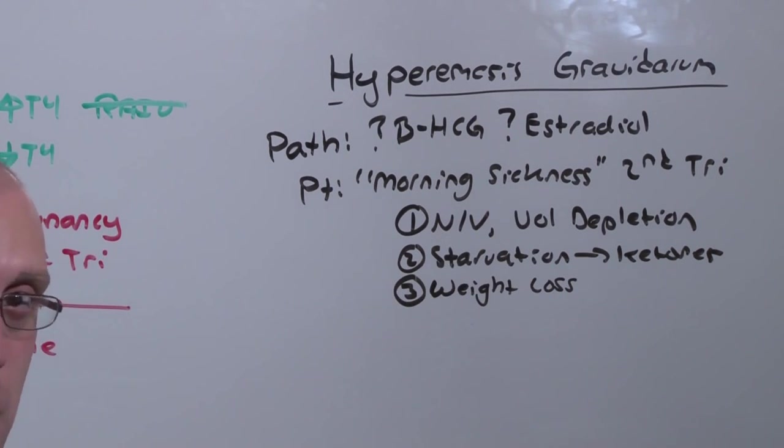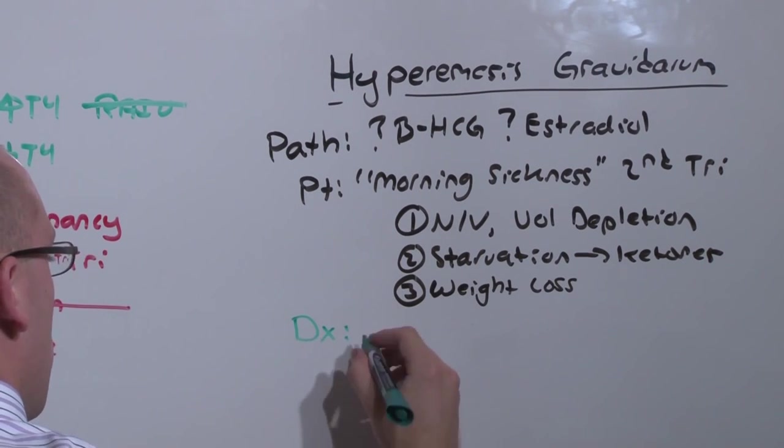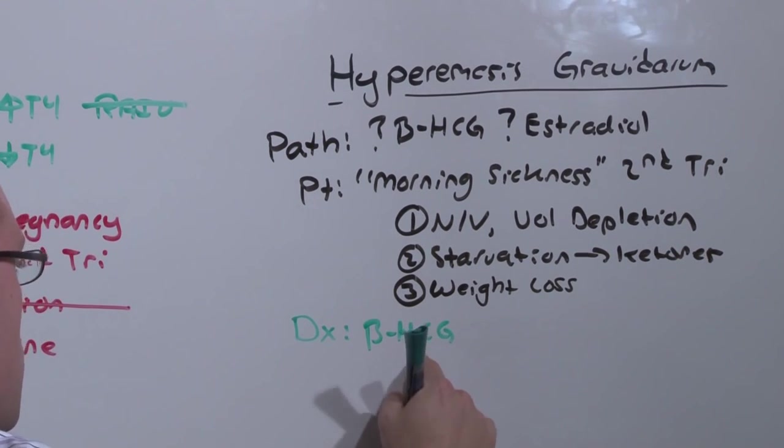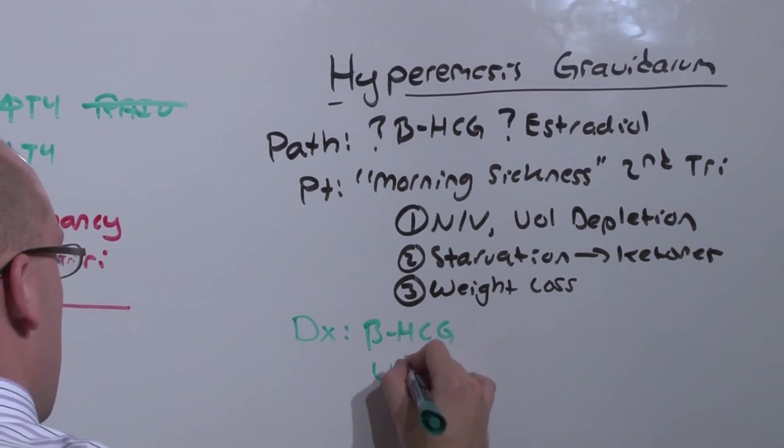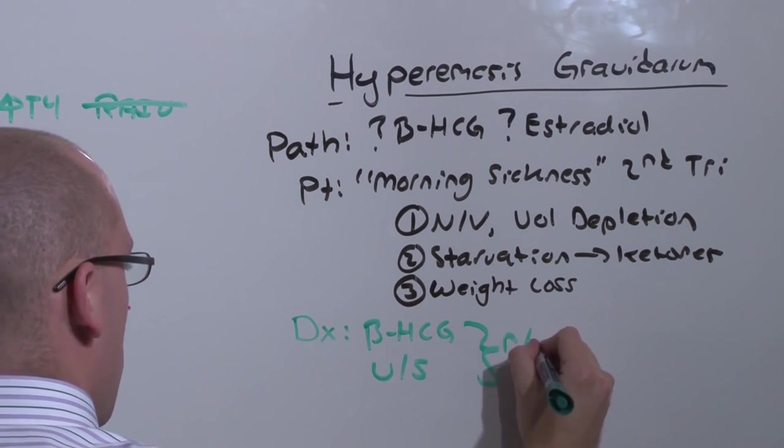And what you do for a patient with hyperemesis gravidarum is simply make sure it's not a mole. So you're going to get a beta-HCG to make sure it's an appropriate level. Remember, moles present with mega-high beta-HCGs. And get an ultrasound to make sure there's no snowstorm. What you're doing is ruling out a mole.